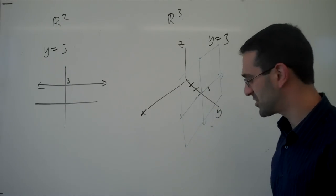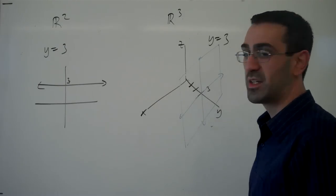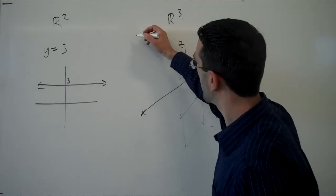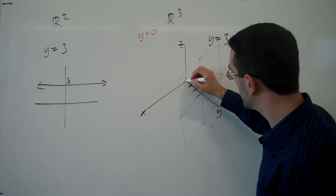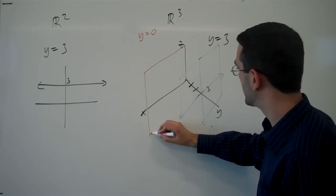So y equals 3 here is describing a plane. Likewise, what would y equals 0 describe? y equals 0 would describe all the points where y is 0 and would include the x and the z axes.